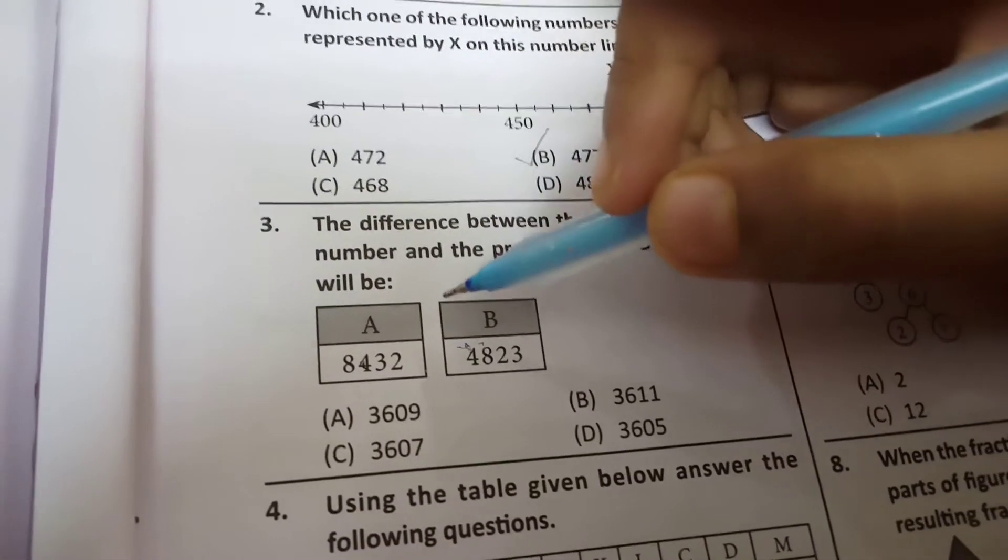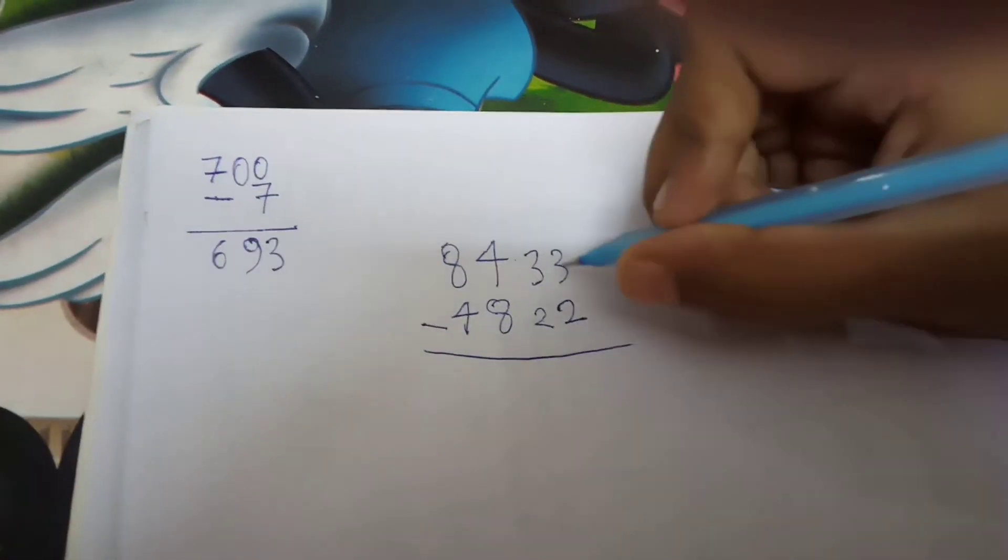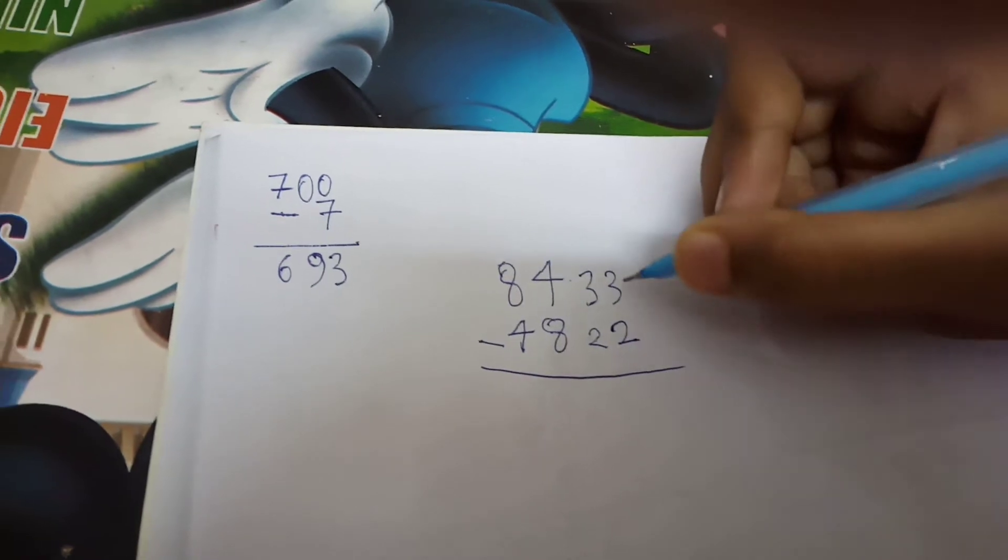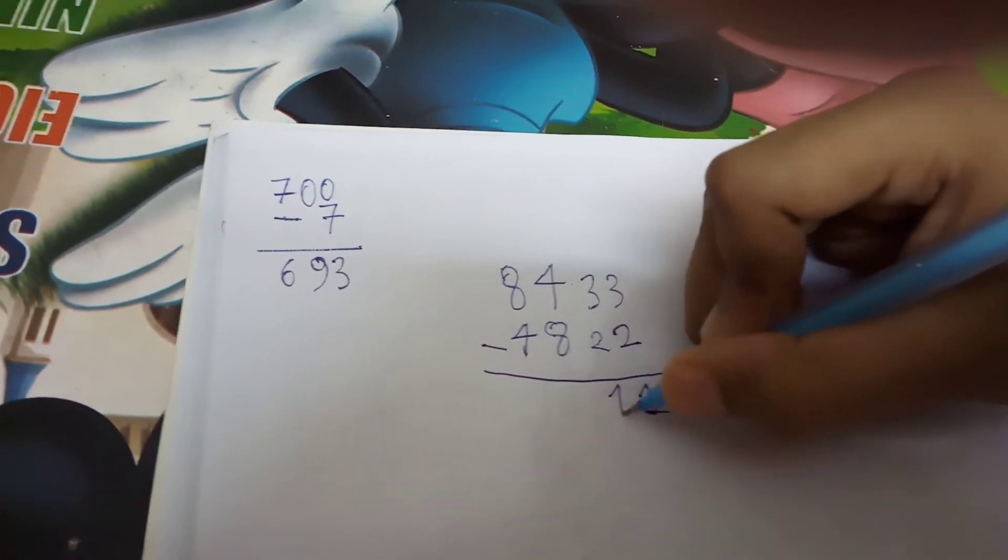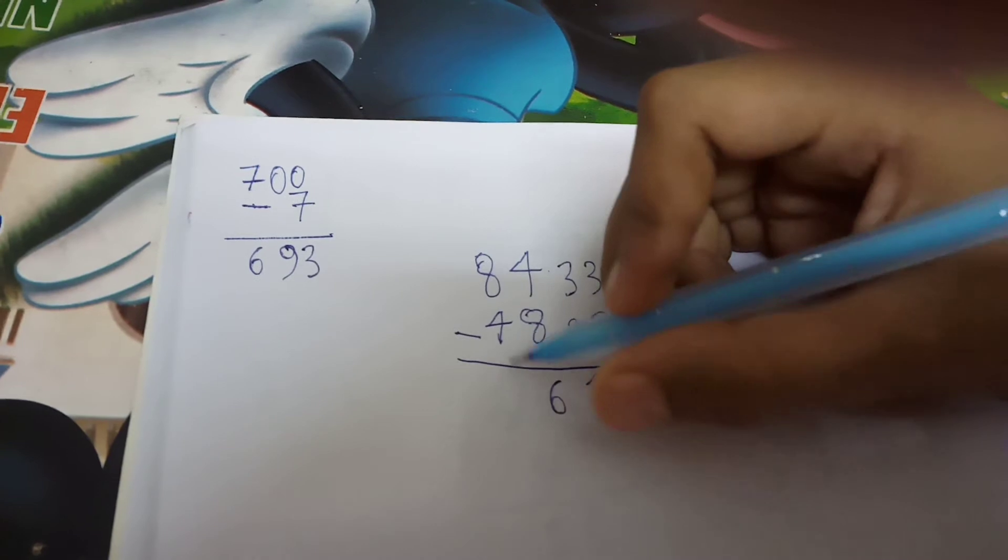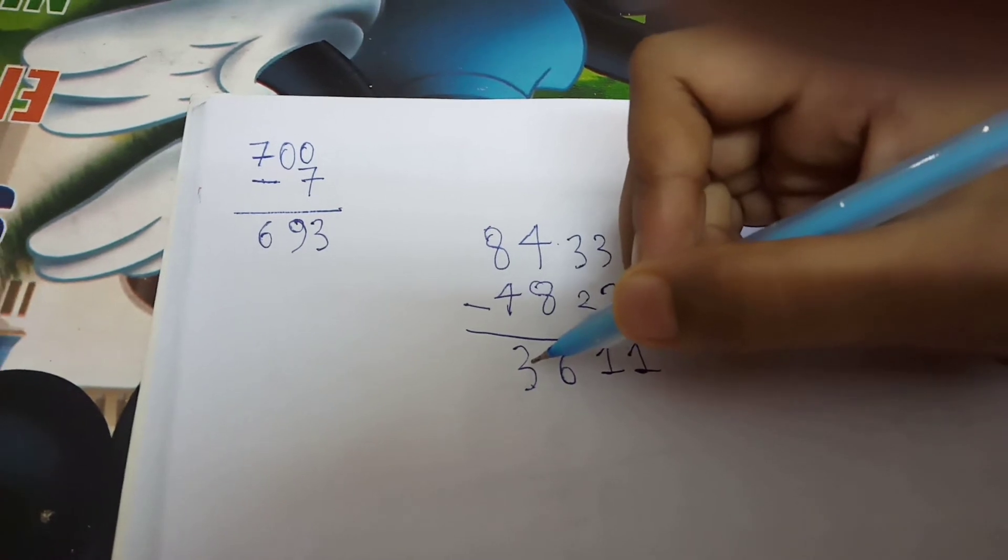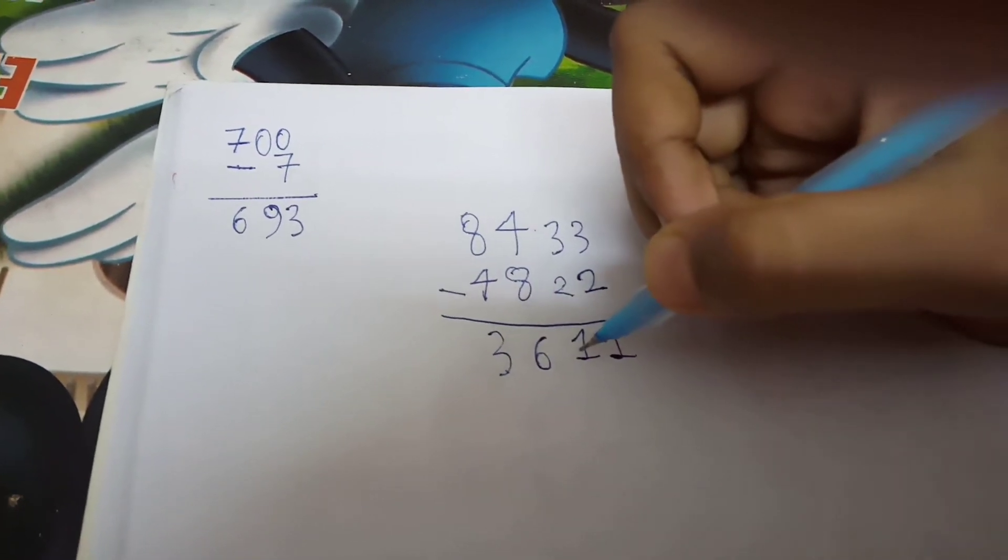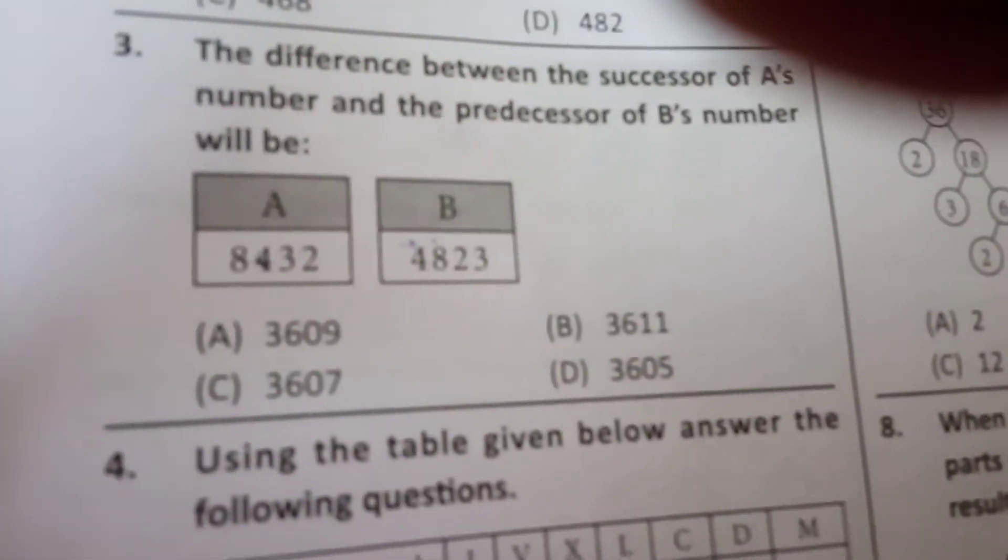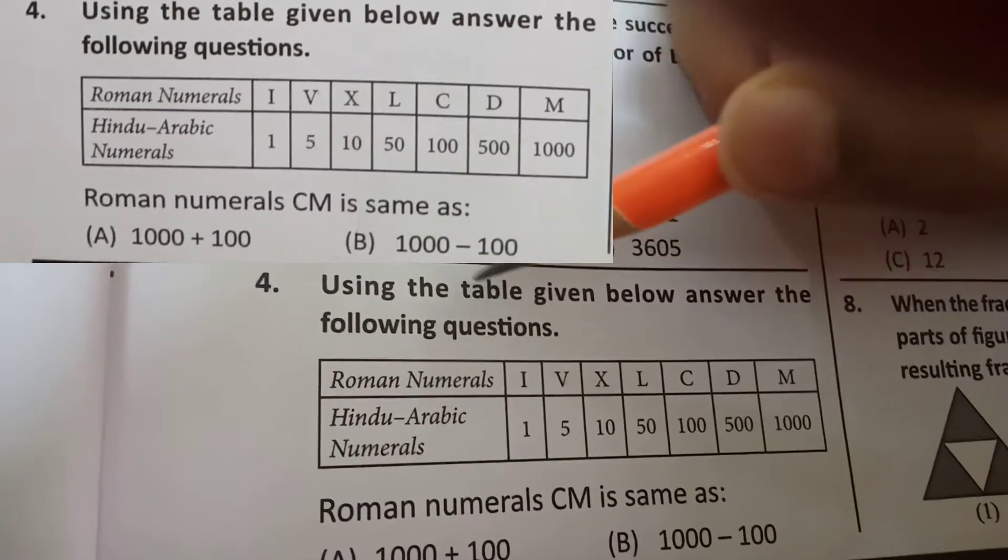Now look, we need to find the difference of A's number and B's number. So we need to subtract. So I will do the subtraction. Look, the answer is 3,611.